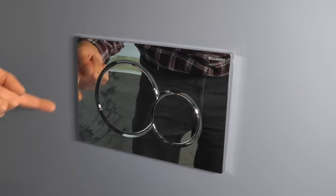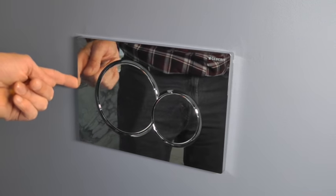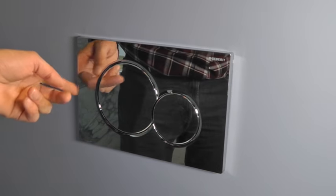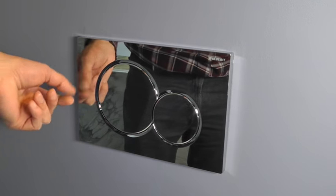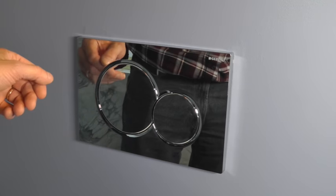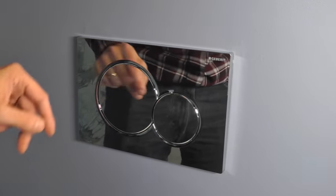So we start out with checking here on the side if there's a screw. Some of these panels have a screw on the side that you have to loosen first. So this one does not have a screw so I'm going to skip that step.